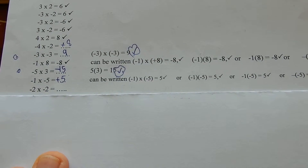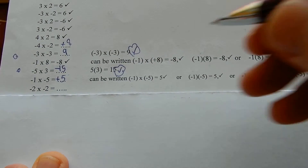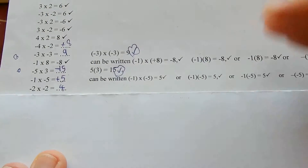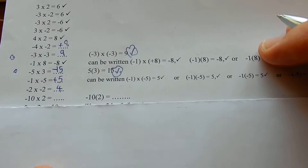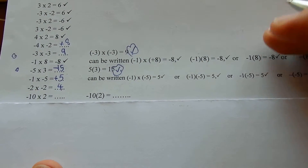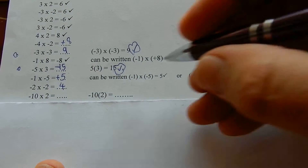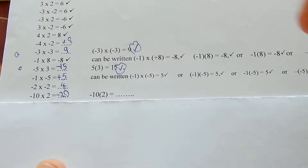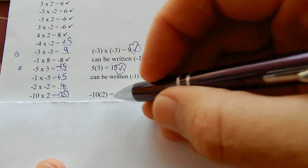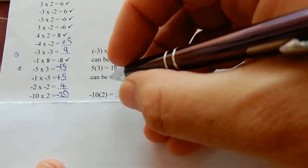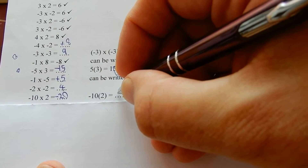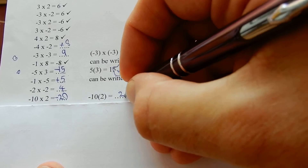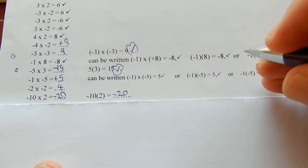2 times 2 is 4. Minus times a minus is a plus, but I don't need to write it. 2 times 10 is 20 — and it's minus 20. Minus 10 times 2: 2 times 10 is 20, minus 20.